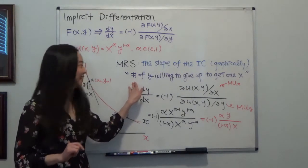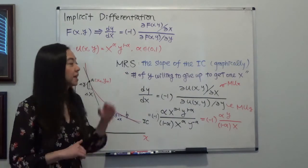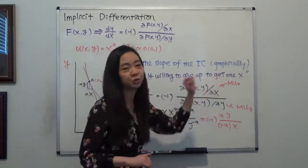And economically, it would be the number of y you're willing to give up in order to get one unit of x.